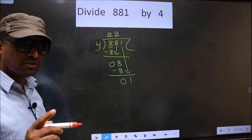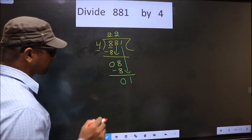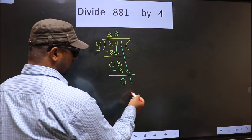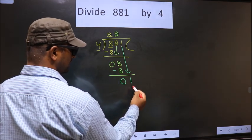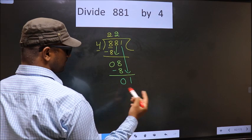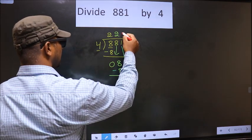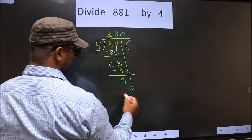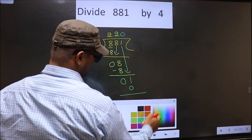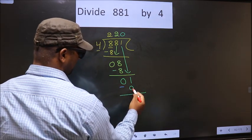Instead what you should think of is what number should we write here. If we write 4 here that is larger than 1. So what we do is we take 0 here. So 4 into 0, 0. Now you subtract 1 minus 0, 1.